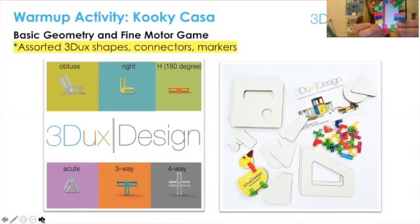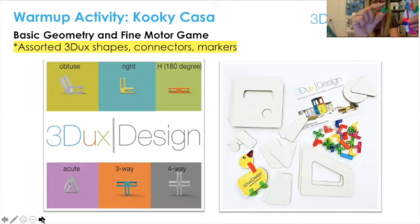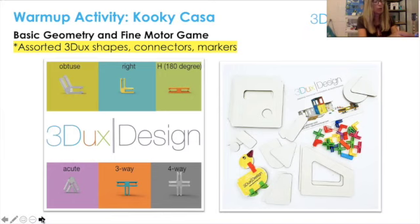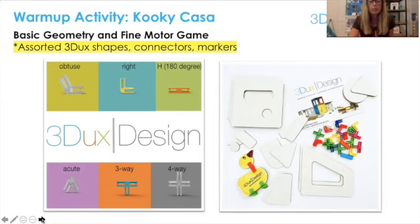Here you can see all of the different 3Ducks design connectors. Most important for this activity are going to be our right-angle connectors, our acute or 60-degree connectors, and our 180-degree connectors, which look like straight lines — or we call them an H connector sometimes for the younger students. Those are the four different angles we're going to learn about and the four different connectors to focus on for this activity.